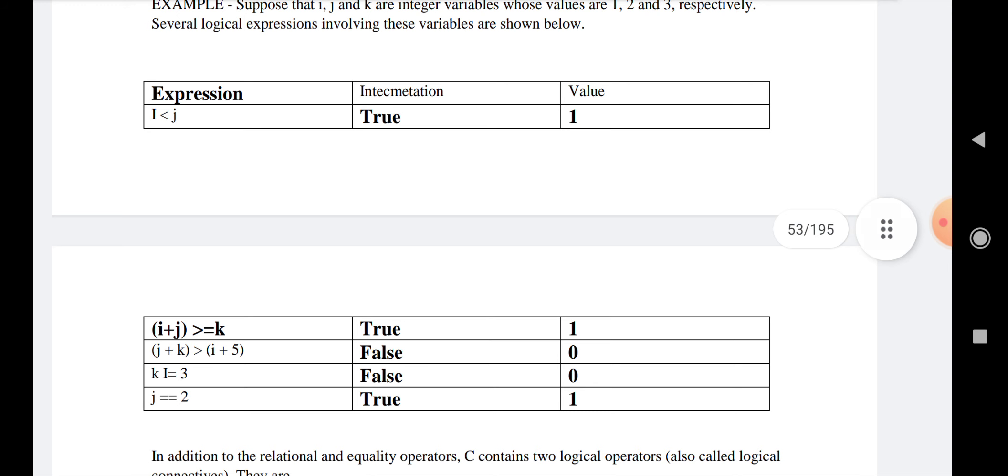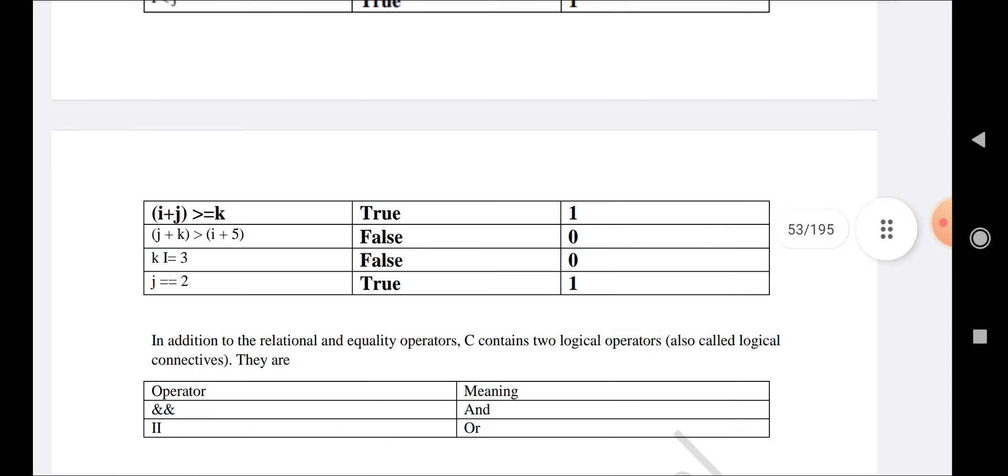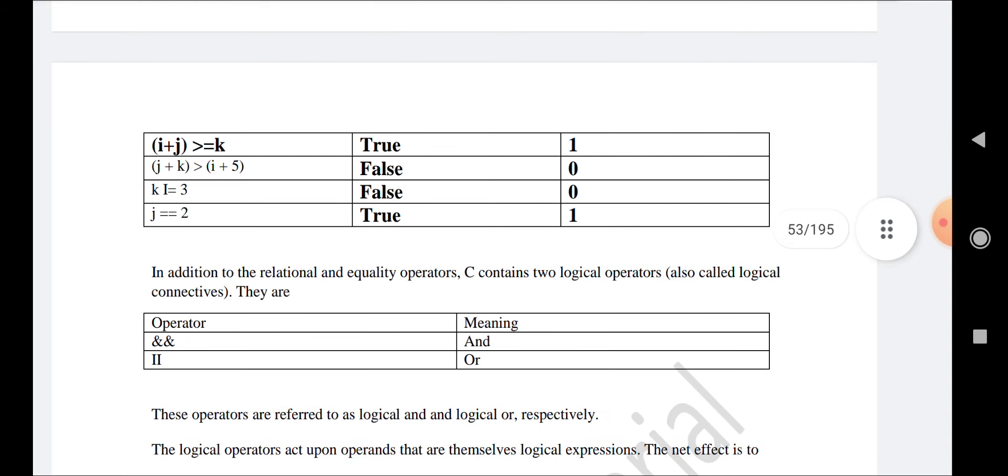For expressions: i greater than j is true, j plus k greater than or equal to k is true, j plus k greater than i minus i plus 5 is false.